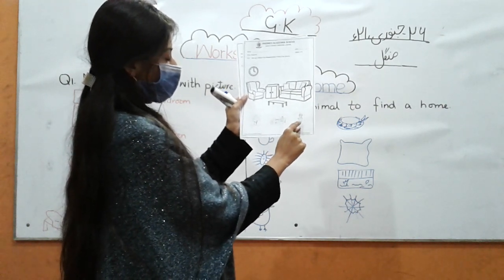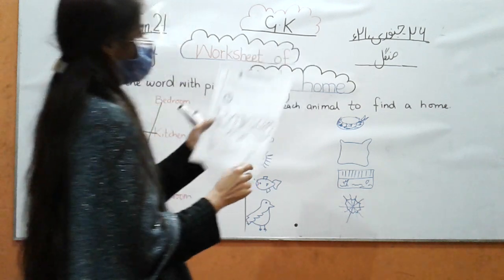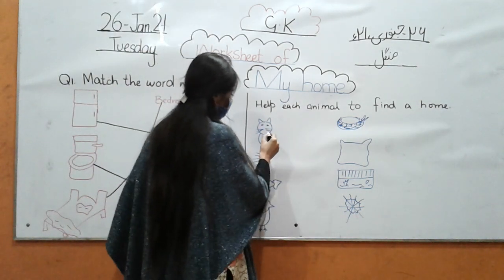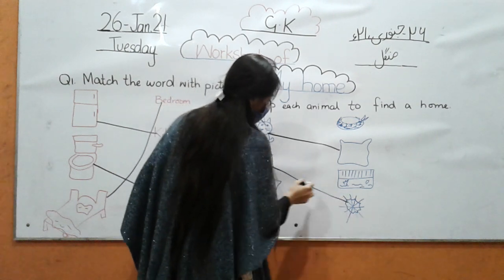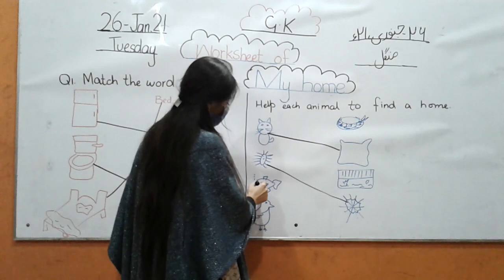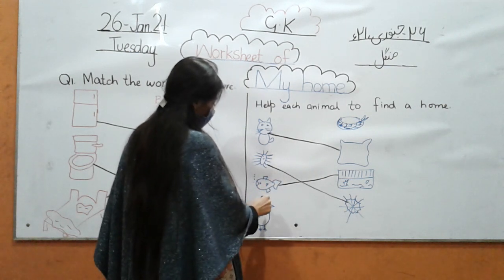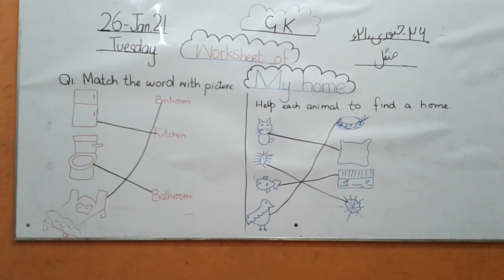There is a scenery — cut the scenery and paste it on the wall. Then there is a boy sitting on the sofa — cut the boy and paste him here on the sofa. For question number 4, help each animal find a home. Match cat with its home. Match spider with spider web — spider web is the spider's home. Match fish with the aquarium. There is a sparrow — sparrow is in the nest, so match sparrow with the nest.